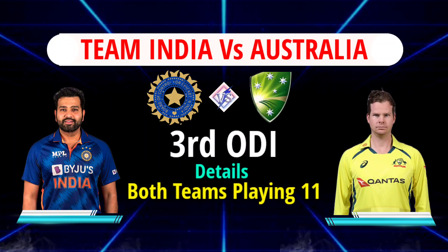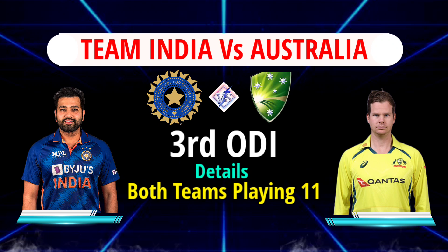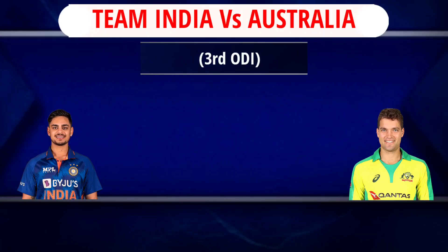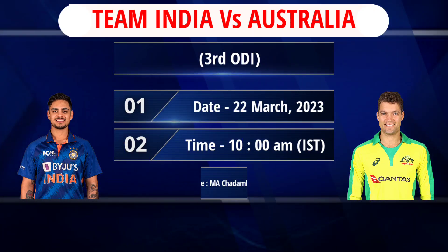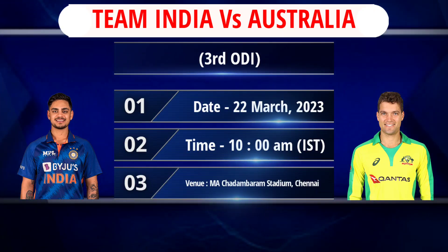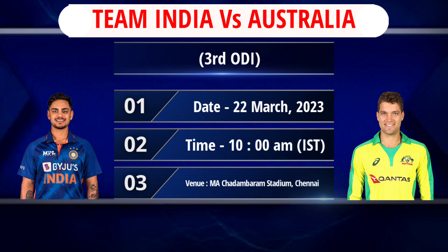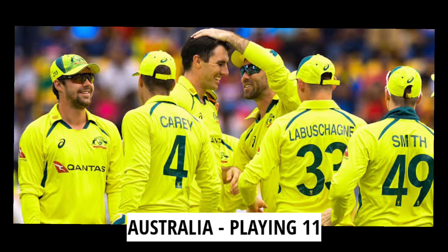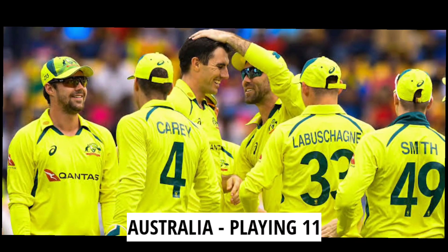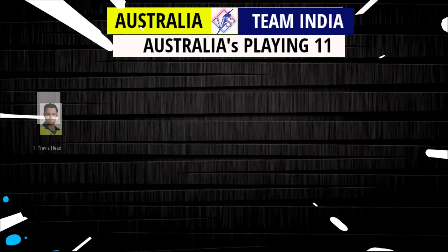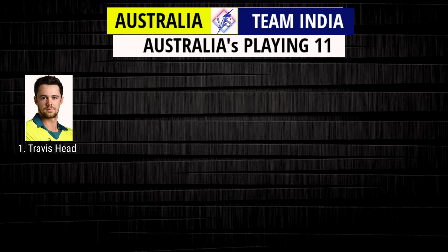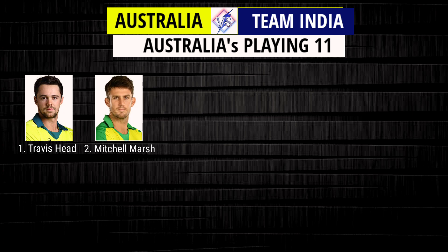India versus Australia third and last ODI match details, and both teams' playing 11. Date: 22nd March 2023, 10 a.m. Indian Standard Time. Venue: M.A. Chidambaram Stadium, Chennai.